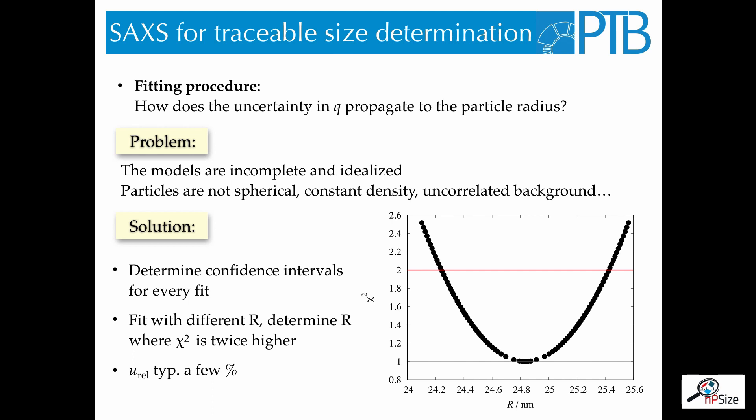This is done by fitting the experimental data with different fixed radii. So we not only fit it with the best fitting radius, but also with different radii, and check the goodness of fit parameter chi-square. On the right-hand side, you see a plot of chi-square versus the particle radius. As you can see, there is a parabolic-like shape, and at some point, this chi-square exceeds the value of 2. These are the two intersections between the red line and the chi-square. At this position, we know that the radius is by one standard deviation of the perfect radius. This gives us the relative uncertainty of the fit, which is typically of the order of a few percent.